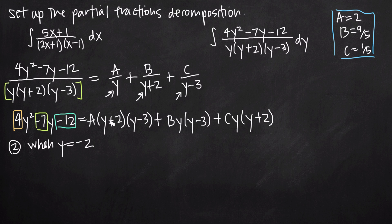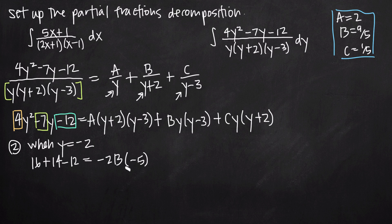Plugging y equals negative 2 into both sides: the left hand side gives 4 times negative 2 squared minus 7 times negative 2 minus 12, which is 4 times 4 plus 14 minus 12 equals 18. On the right hand side A and C go to zero, leaving b times negative 2 times negative 2 minus 3, which is b times negative 2 times negative 5 equals 10b. So 18 equals 10b, giving b equals 18/10 equals 9/5.